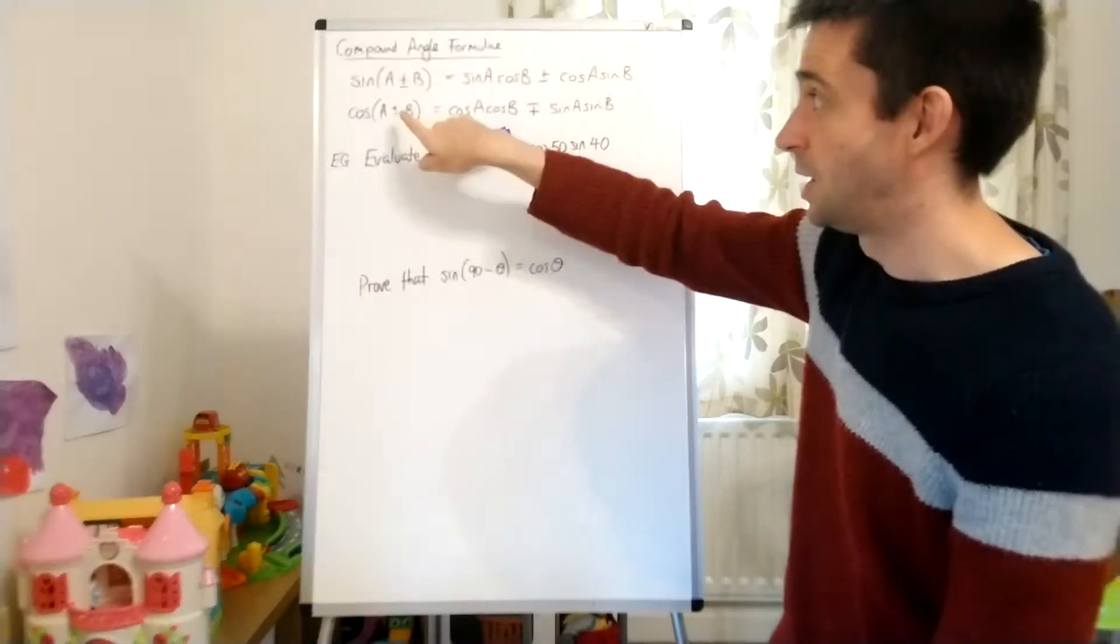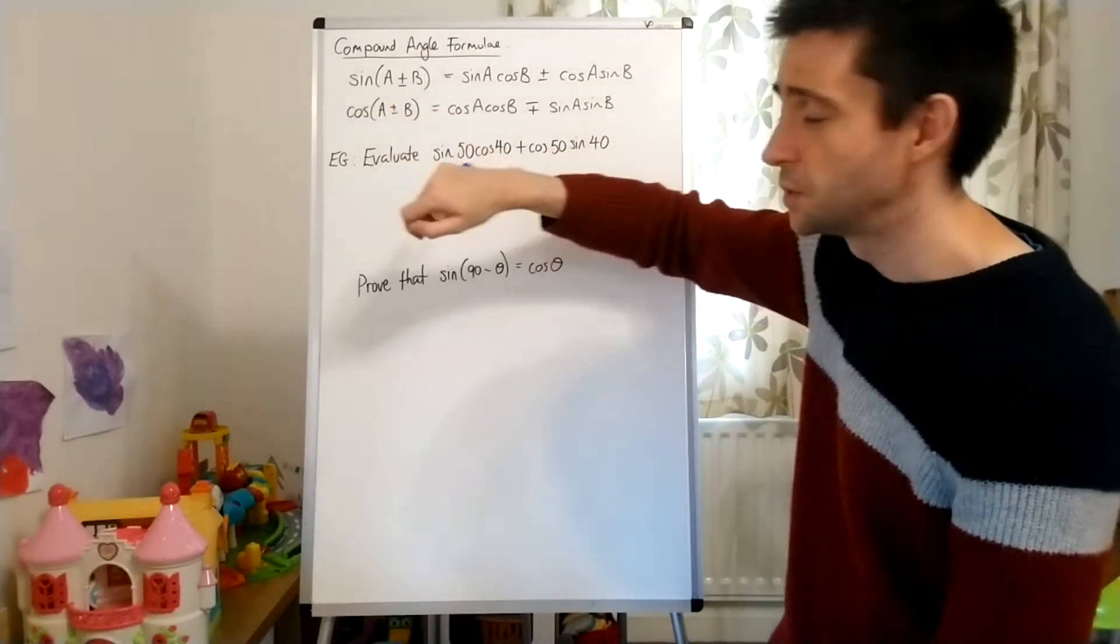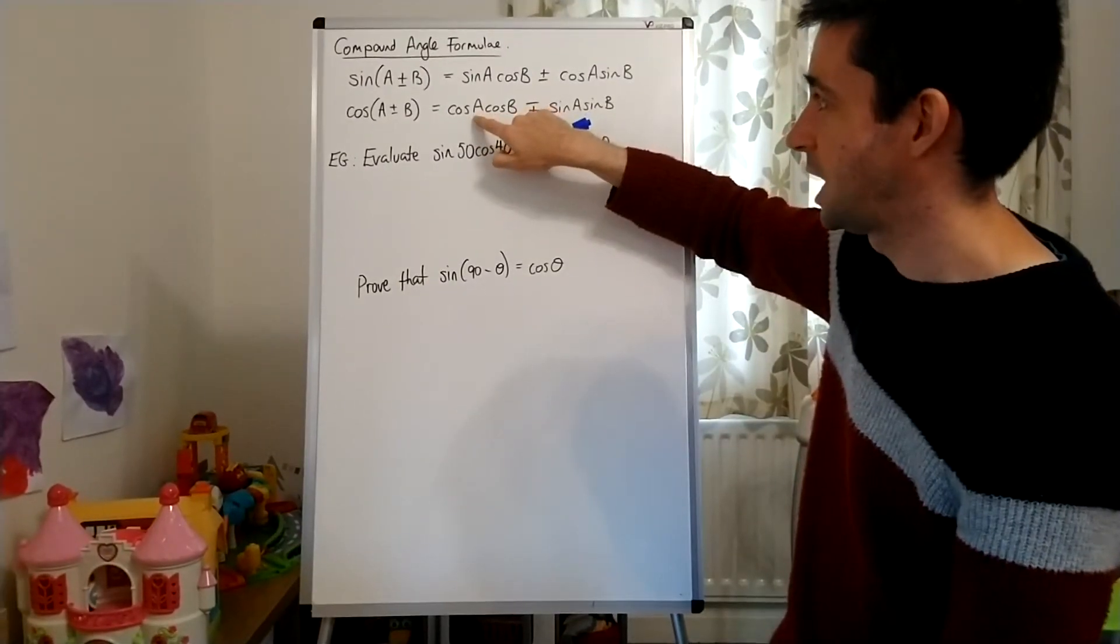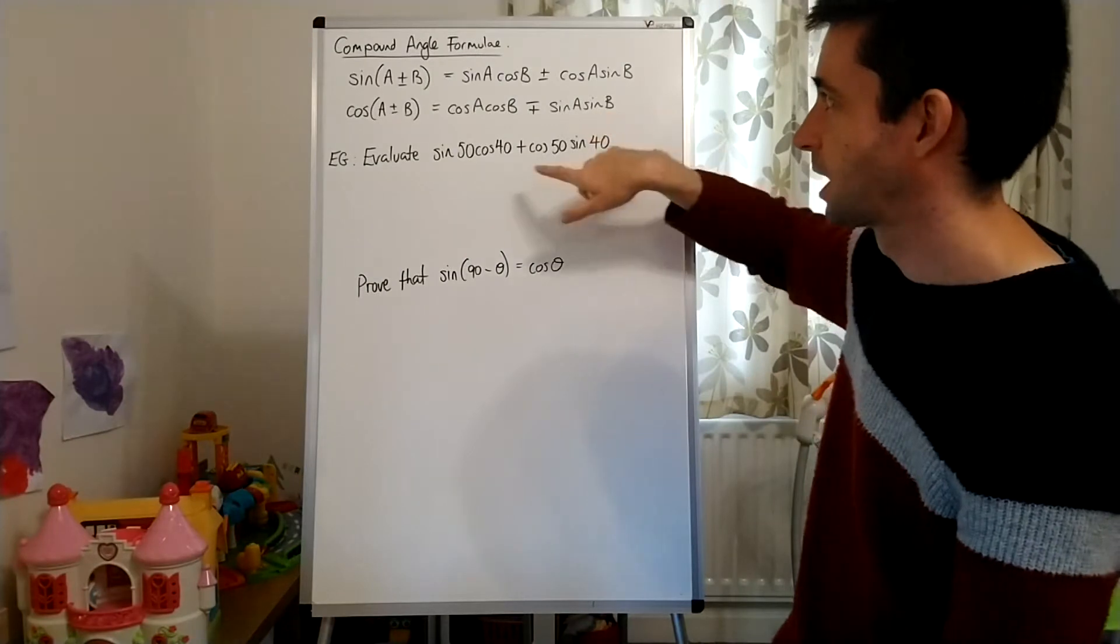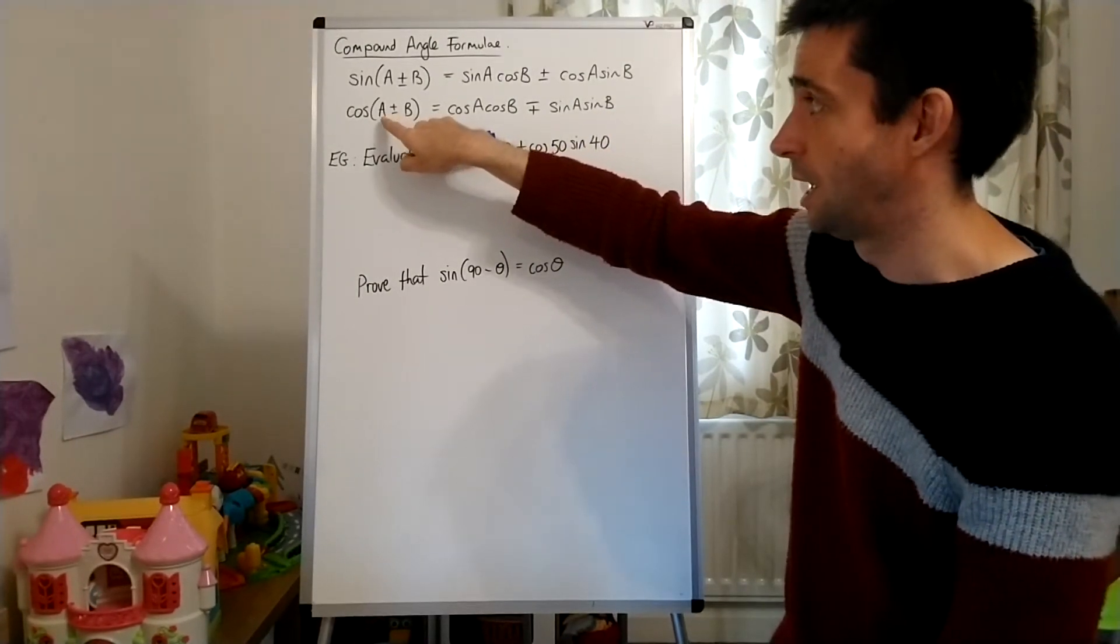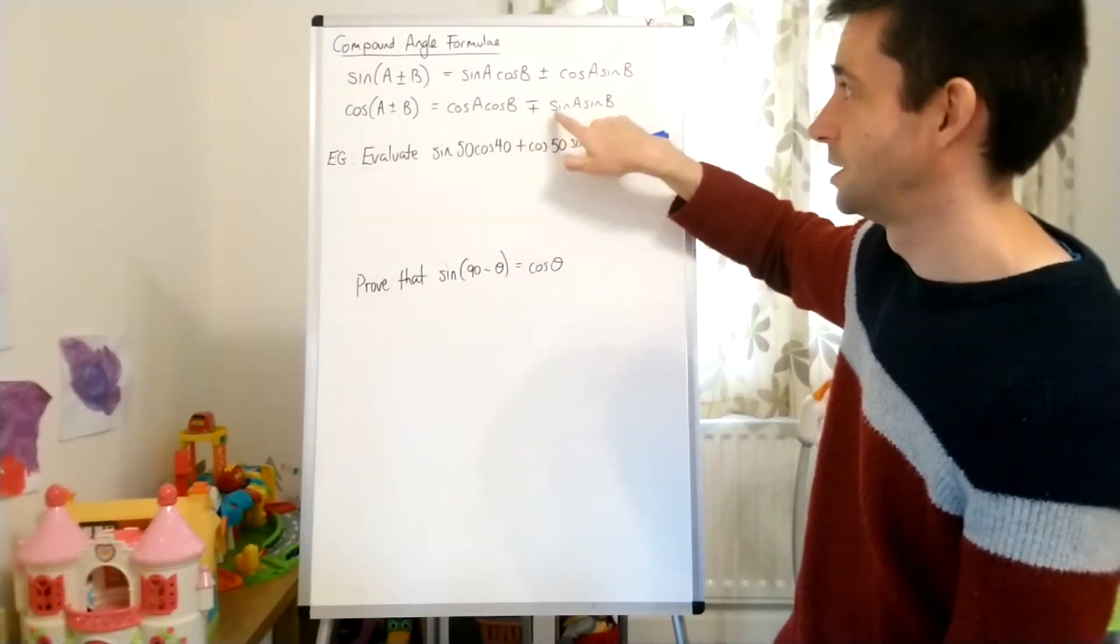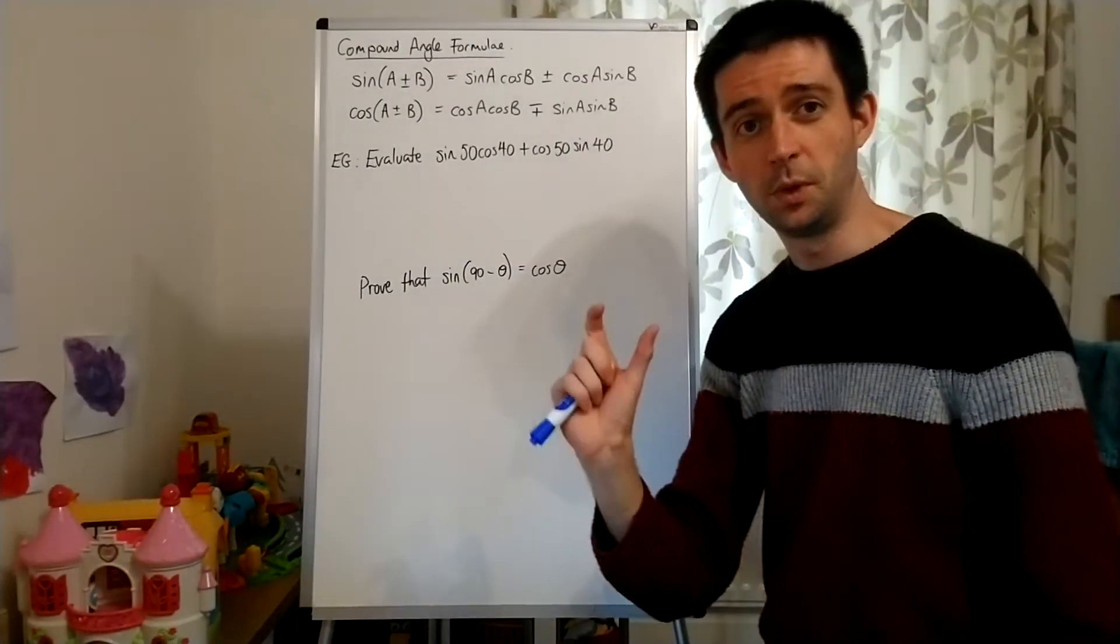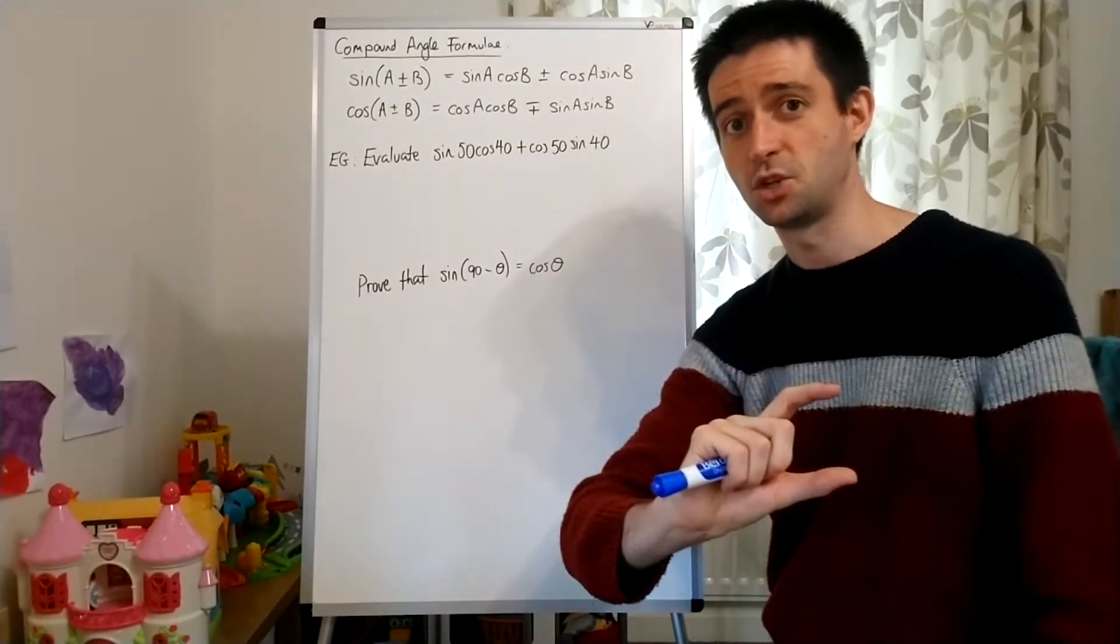If you have cos of A plus B inside a bracket, A and B representing two different angles, then you can write cos A cos B minus sine A sine B. And if it's minus inside the bracket, so the difference between angles A and B, you can write it as cos A cos B plus sine A sine B. With the cos one, whatever sign you've got in the bracket, you've got the opposite sign in the expansion.